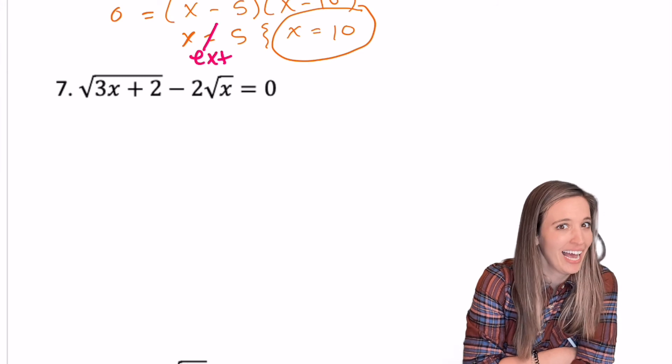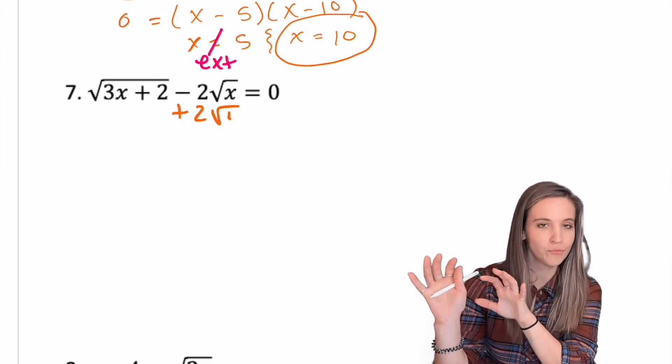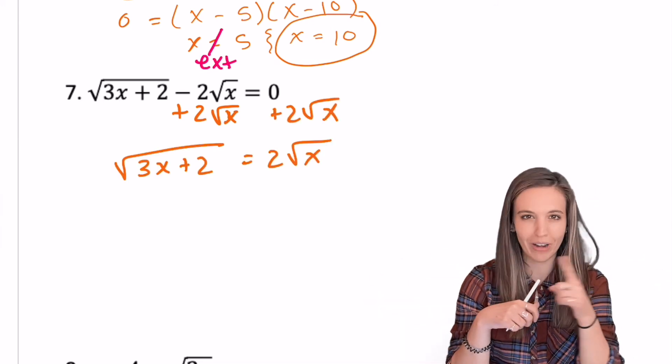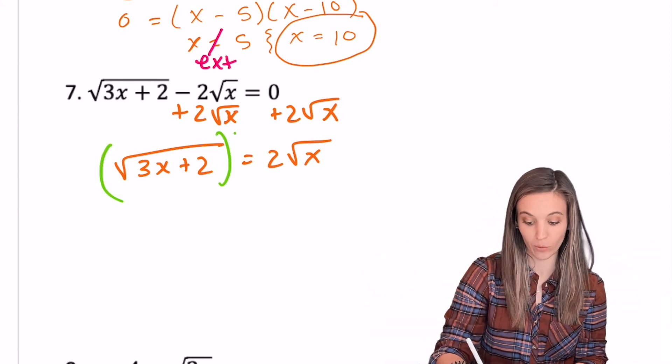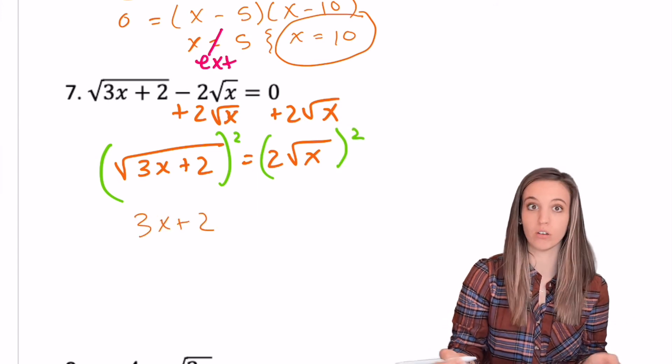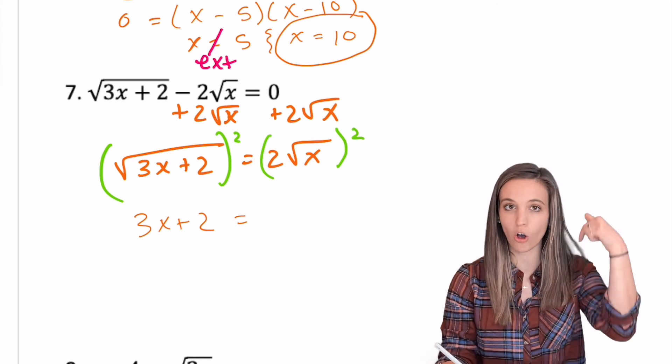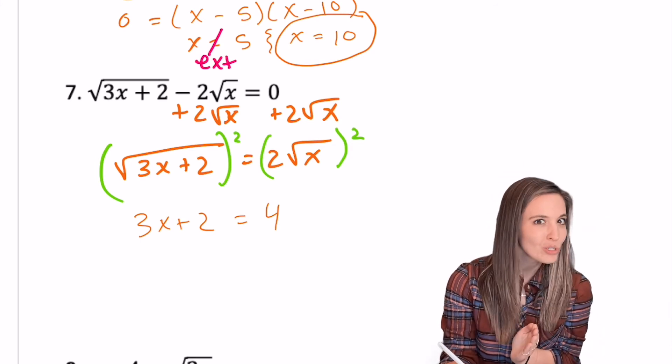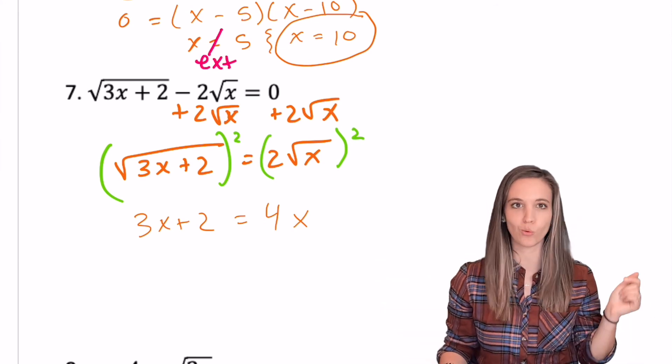Now looking at this next one, I have two different square roots. So I'm going to make sure I isolate them on each side of my equation. So that way I can square them to undo them. So to do that, I added that two root x to the other side. So now I have a radical on each side and I can square the whole thing. Whatever I do to one side, I do to the other. So I'm going to end up with three x plus two because the square ends the square root equals, okay, I got a two outside the square root that's also being squared. So that's going to be four square root x squared is x. All right, now x is to one side and solve.